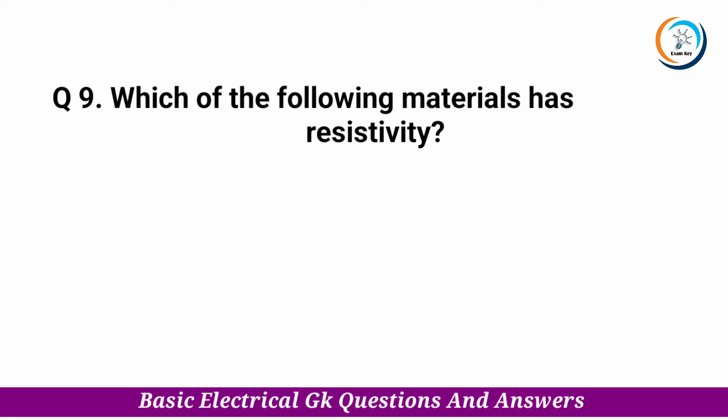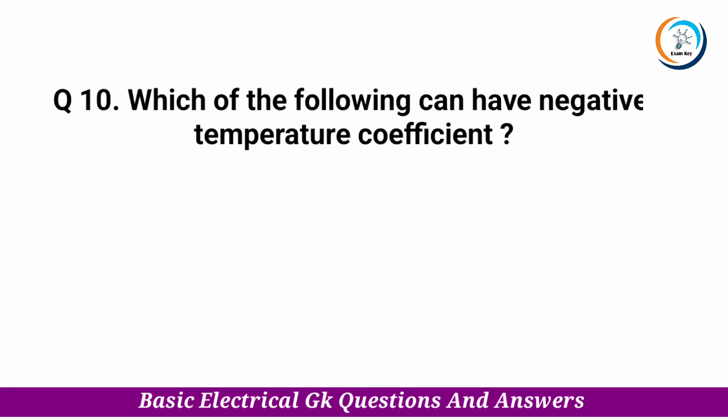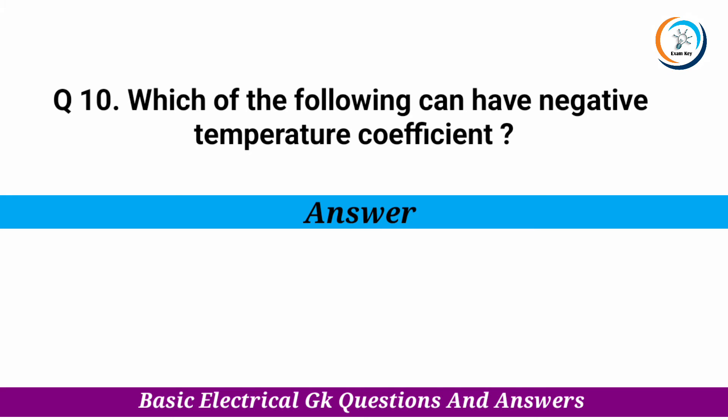Which of the following materials has the least resistivity? — Answer: copper. Which of the following can have a negative temperature coefficient? — Answer: electrolytes.